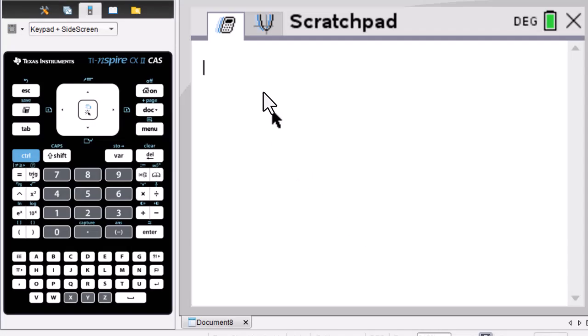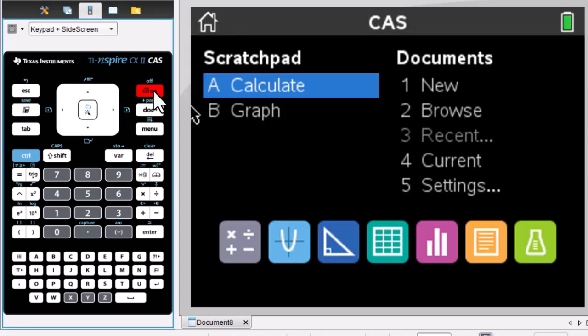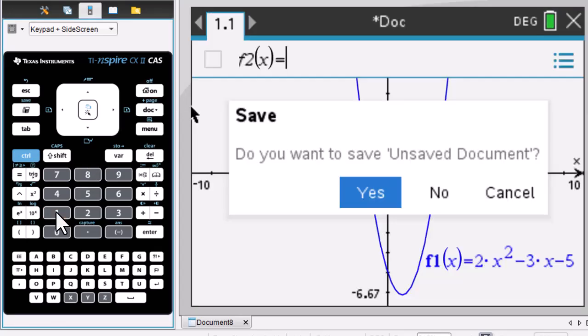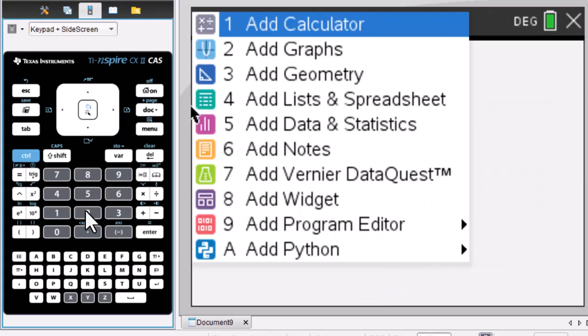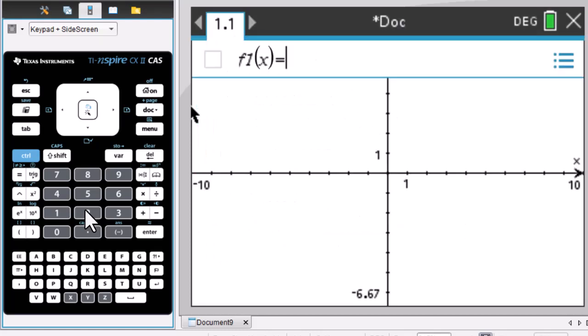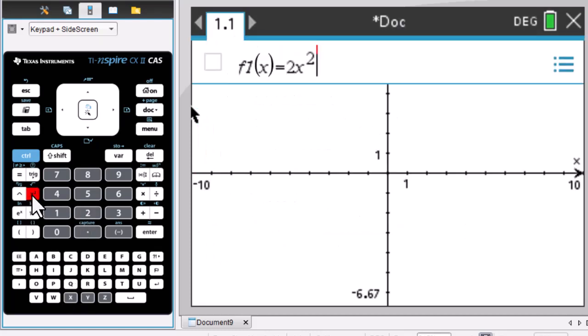This video is about drawing tangent lines on TI-Nspire Calculator. Press ON, 1, NO, add graphs. Type in the function 2x²-3x-5, enter.